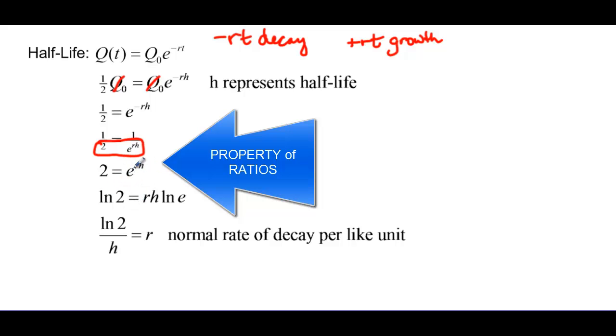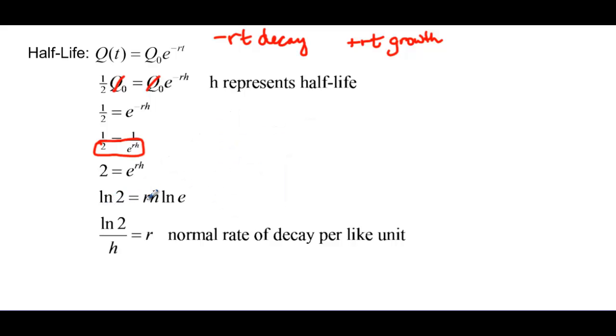And taking the natural log of both sides so that we can solve for that r, natural log of 2 is equal to rh times the natural log of e. And if we want to solve, remember this is 1, so we want to solve for r, we just have to divide ln 2 by h. So this is going to be our normal rate of decay per unit.